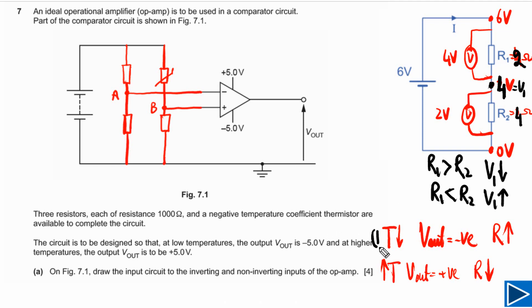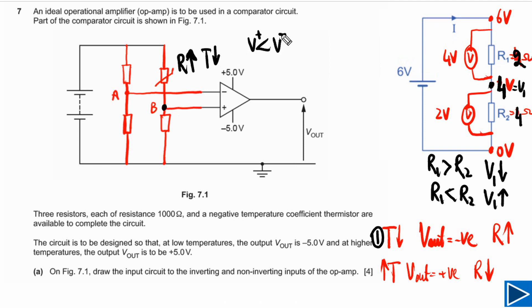For the first condition, when temperature is low, Vout has to be negative and resistance of the thermistor will be higher. When this resistance is higher, the potential at that point will be lower, meaning V+ will be lower than V−. In this case Vout will be negative — so this circuit checks out.